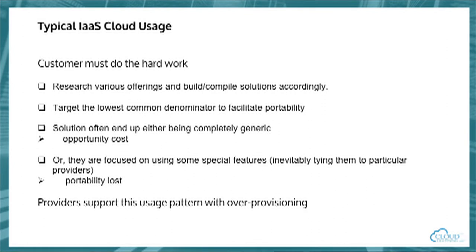So the solution typically ends up being generic, and that's an opportunity cost. If the customer goes towards some specific exotic hardware offered by one provider only, they risk the loss of portability. In this model, all the provider effectively does is sell access to resources and make sure there's enough by just over-provisioning.